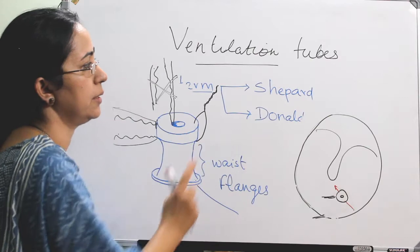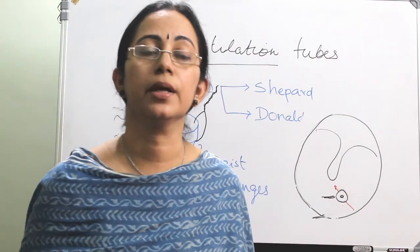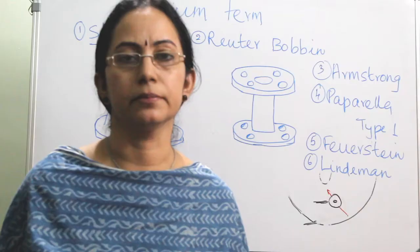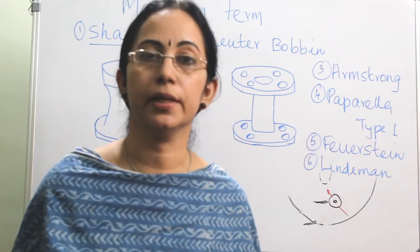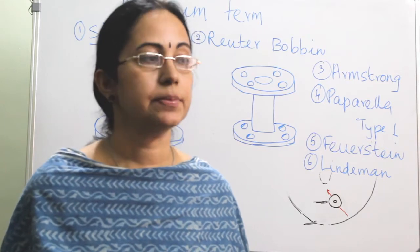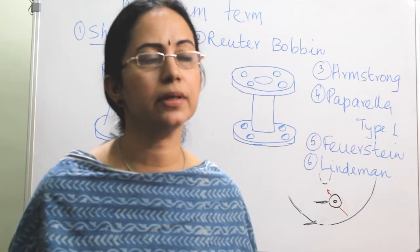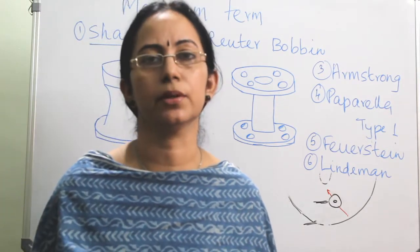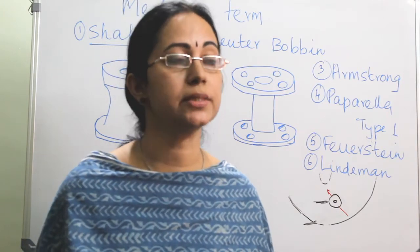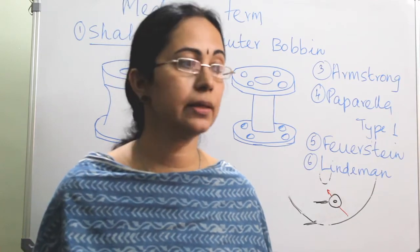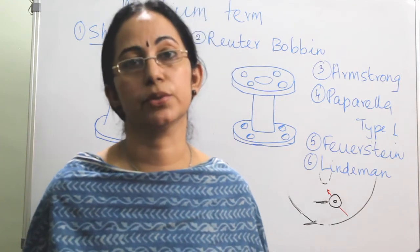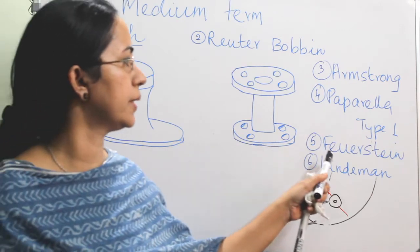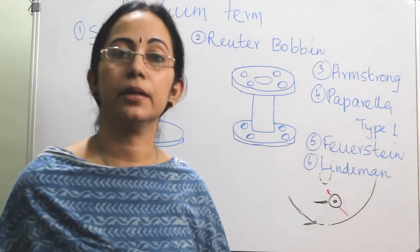Under short-term ventilation tubes come the Shepherd and the Donarsal, which extrude in 45% of cases within 6 months. Medium-term tubes are used when ventilation is needed for around 1 to 2 years — especially in cases of recurrent acute otitis media, severe adhesive otitis media, or Eustachian tube dysfunction. Some surgeons always prefer medium-term tubes because it is difficult to predict how long ventilation will be required. The commonly used medium-term tubes are the Shah, Rutter bobbin, Armstrong, Paparella type 1, Furstenberg tube, and Lindman-Silverstein tube.